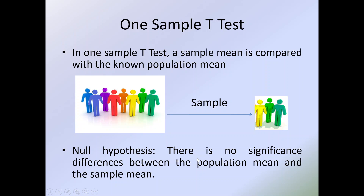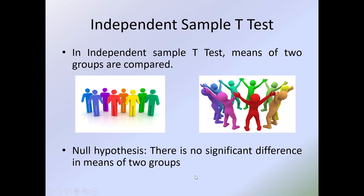The null hypothesis is there is no significant difference between the population mean and the sample mean. In the independent sample t-test, we are comparing two independent groups — for example, the weight of male and female, or marks of section A and section B.